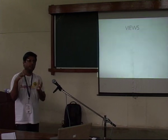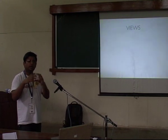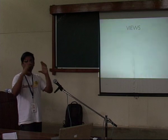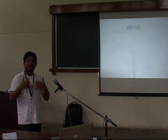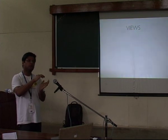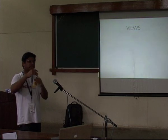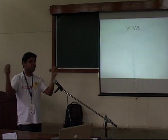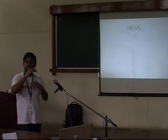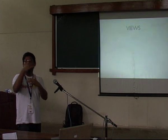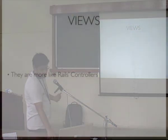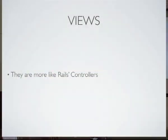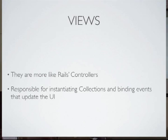Unlike Rails or Python where views are very dumb things that just render stuff, in Backbone views are more like controllers. Views are responsible for initializing things and hooking them up to each other. They are more like Rails controllers — responsible for instantiating collections, binding events, doing the fetches, all of that stuff.